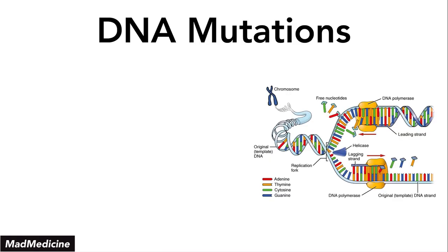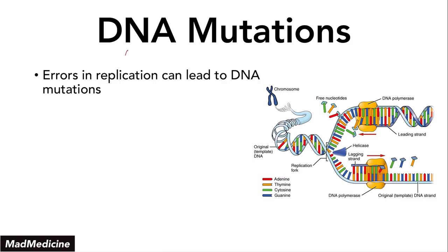DNA mutations are very important. They can occur in a lot of ways, and oftentimes DNA mutations occur due to errors in replication. When you have replication errors, you can lead to DNA mutations. You can also get DNA mutations due to radiation, such as UV radiation. You can also get them due to infections — for example, think about the Epstein-Barr virus, or Kaposi's sarcoma that can be caused due to HIV. So DNA mutations can be caused by a numerous amount of things.